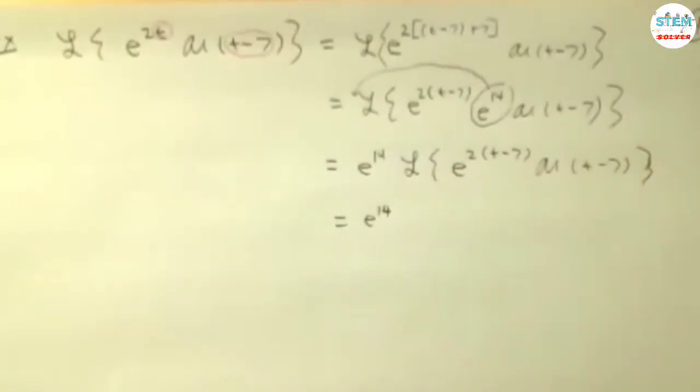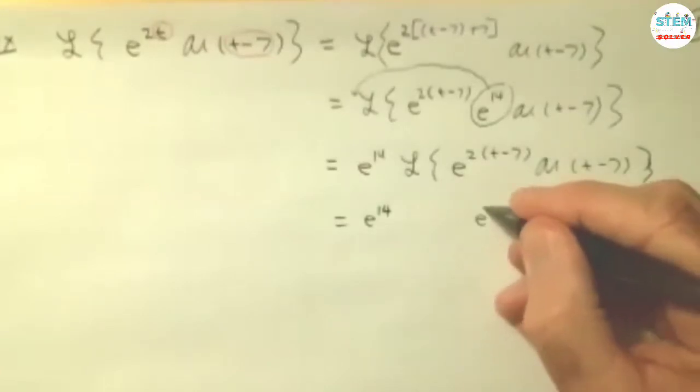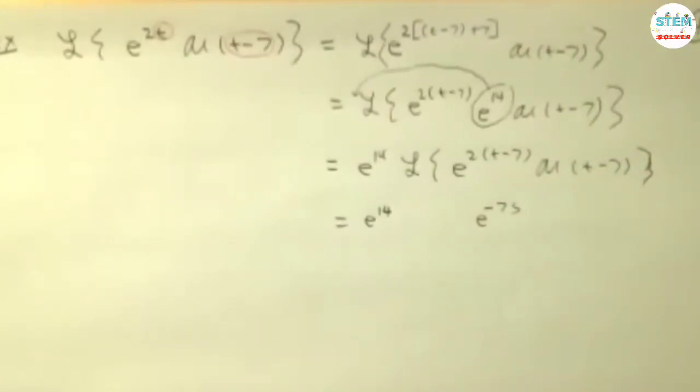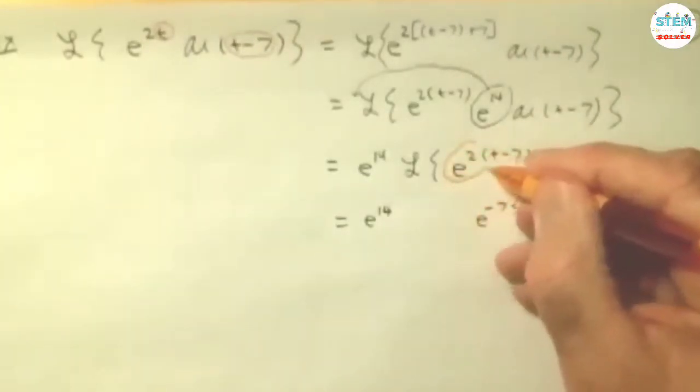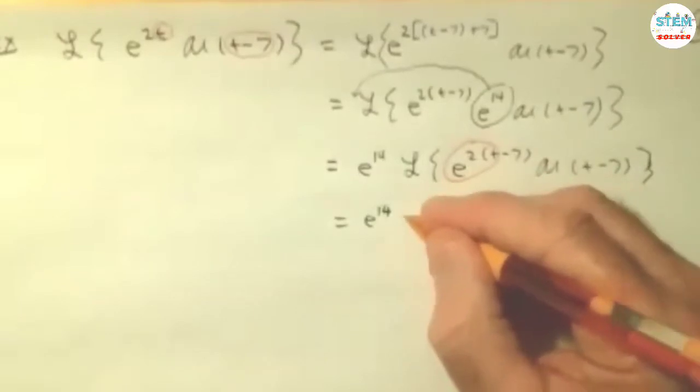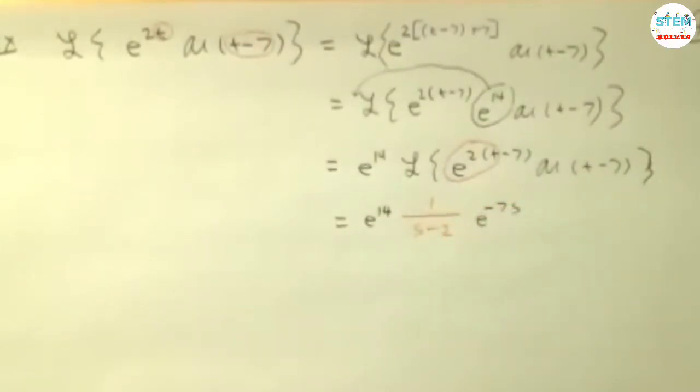And again, what I'm going to do here is I'm going to deal with the shift right away. So now it's going to be e to the negative 7s. Then I'm just going to lock in on my function, apply the shift. So I'm actually taking the transform of just this. So that's going to be e to the 14 times e to the negative 7s over s minus 2.